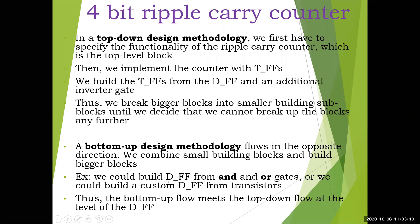For example, in the same ripple carry counter example, in bottom-up we could build D flip-flops from AND and OR gates, and those gates themselves from NMOS and PMOS transistors at the switch level. We can construct a custom D flip-flop from transistors. The bottom-up flow then meets the top-down flow at the level of the D flip-flop — that is the intermediate meeting point.